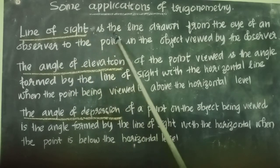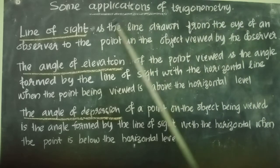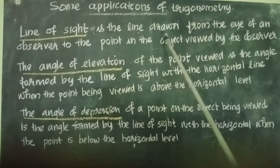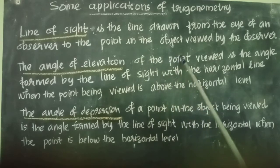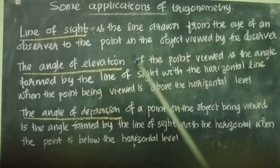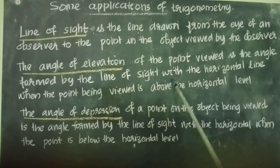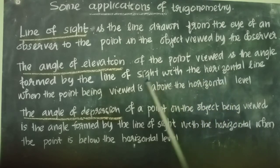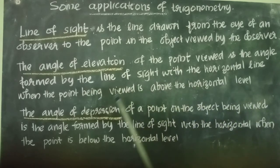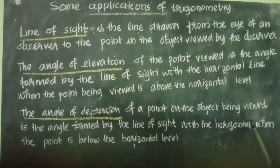To summarize: the line of sight is the line drawn from the eye of an observer to the point in the object viewed by the observer. The angle of elevation of the point viewed is the angle formed by the line of sight with the horizontal line when the point being viewed is above the horizontal level. The angle of depression of the object being viewed is the angle formed by the line of sight with the horizontal line when the point is below the horizontal level.